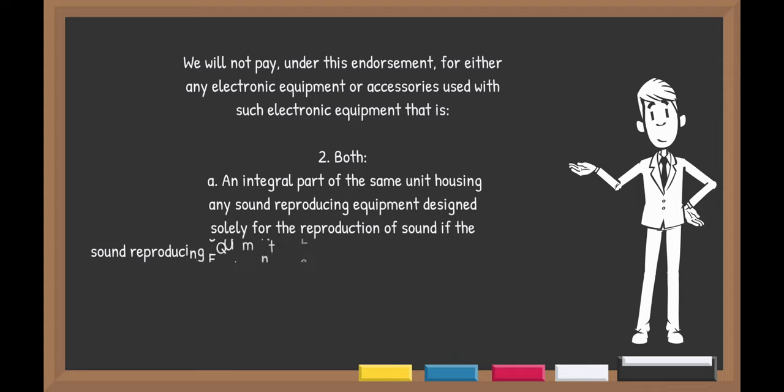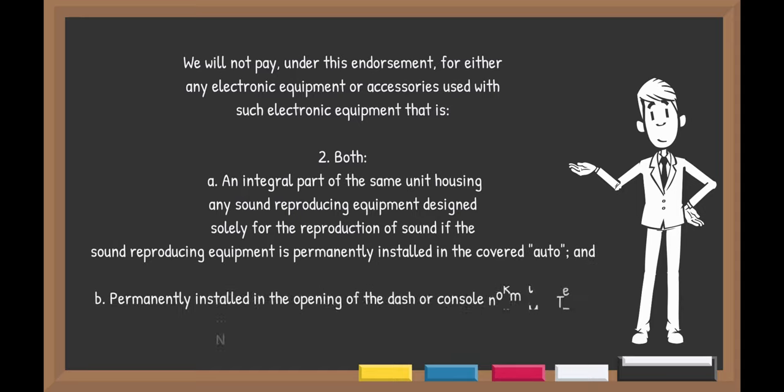The exclusion section of this policy often states we will not pay under this endorsement for either any electronic equipment or accessories used with such electronic equipment that is both an integral part of the same unit housing, any sound reproducing equipment designed solely for the reproduction of sound, if the sound reproducing equipment is permanently installed in the covered auto and permanently installed in the opening of the dash or console normally used by the manufacturer for the installation of a radio.